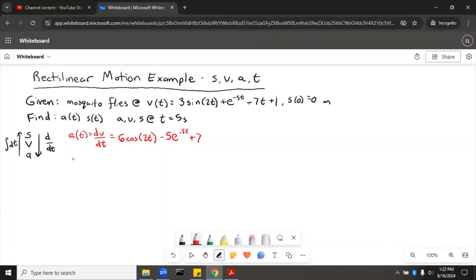Now if we want to get a at 5, we'll say a of 5 seconds equals 6 cosine of 10 radians minus 5e to the negative 25 plus 7. And plug that all into a calculator, we get 1.96 meters per second squared. So that's a at 5.